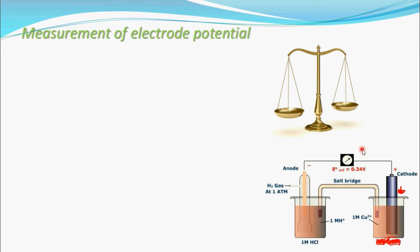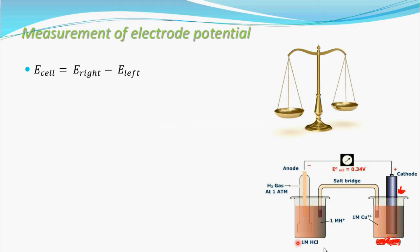Whatever EMF is shown by the voltmeter is nothing but the electrode potential of that electrode. How do we know this? The EMF of the whole cell equals the potential of the right side minus the potential of the left side — that is, E_cell = E_right − E_left. EMF, electromotive force, is also called potential.